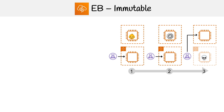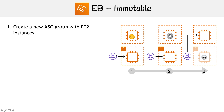Let's take a look at immutable deploys. This one really is reliant on the auto scaling group. Over here, what you can see is that we already have an elastic load balancer that points to an EC2 instance that's inside of an auto scaling group.